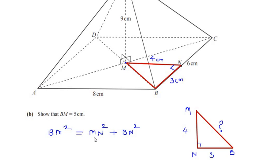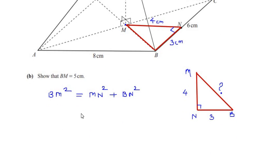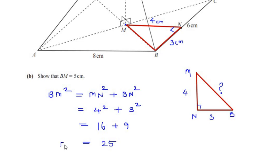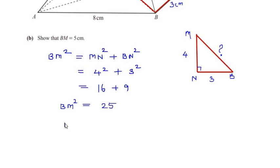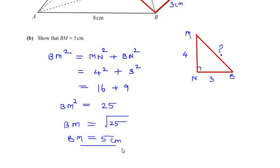So BM² equals MN² plus BN², which is 4² plus 3², giving us 16 plus 9 equals 25. Taking the square root of 25 gives us 5 centimeters. So we have shown that BM is equal to 5 centimeters.